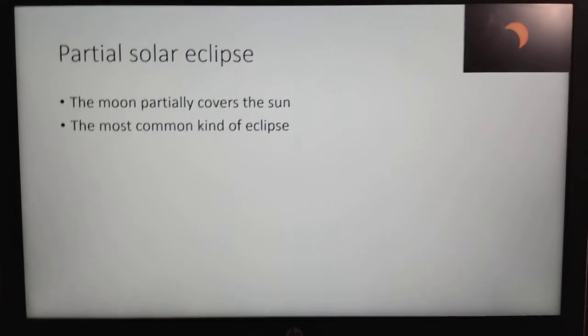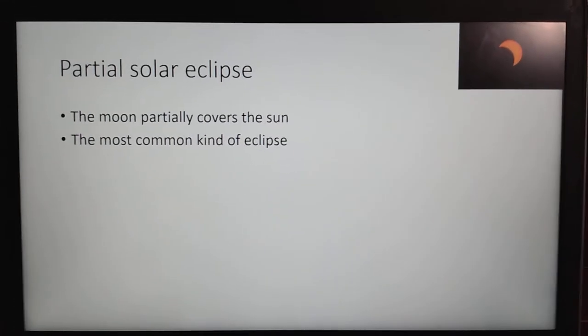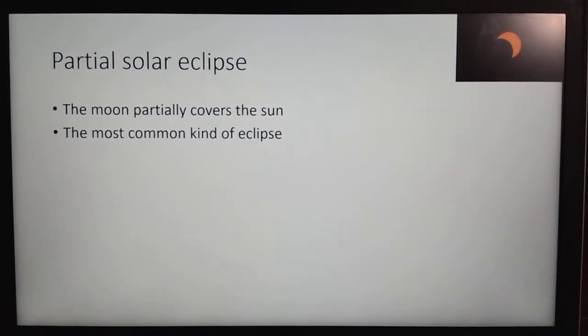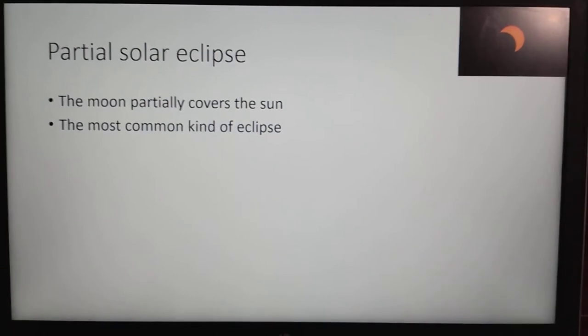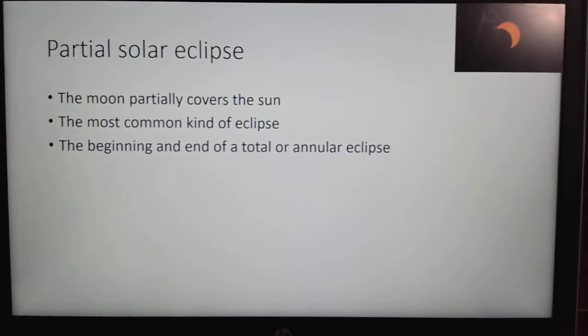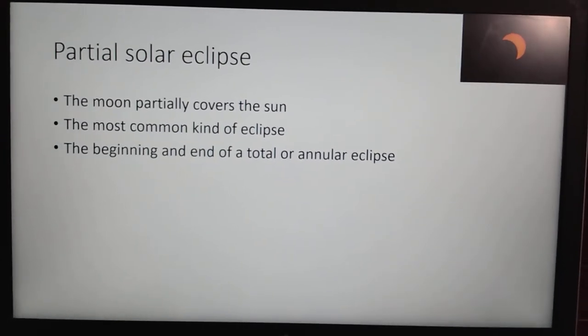Well, whenever there's a solar eclipse, it is inevitable that somebody, somewhere, will see a partial eclipse. Which leads me to my next one, which is it's the beginning and end of a total or annular eclipse.